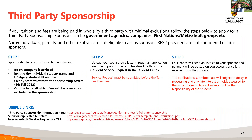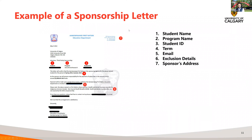Here is an example of a sponsorship letter we received from a student. It states the student's name, program, and student ID. It states that the student is sponsored for the spring and summer terms, includes the sponsor's contact information, and notes that they do not cover health and dental insurance. It also has the company's address, name, and logo — this is an official letter on the company's letterhead with all the information needed to approve a third party sponsorship application.